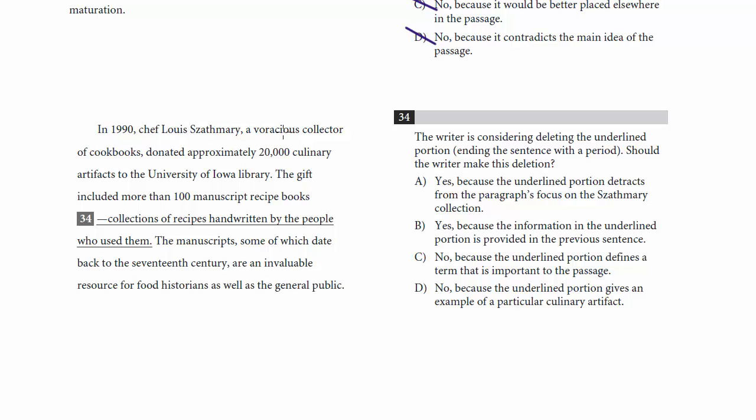In 1990, Chef Louis Sudmari, a voracious collector of cookbooks, donated approximately 20,000 culinary artifacts to the University of Iowa Library. The gift included more than 100 manuscript recipe books, collections of recipes handwritten by the people who use them. So this dashed off portion seems to me to be a definition. It tells us what a recipe book is. Now, maybe we can infer what a recipe book is, that it's a book that contains recipes. But this tells us that they're handwritten by the people who use them. That's a collection of recipes in these books. So do we really want to get rid of this? To me, this seems actually kind of essential to the paragraph, essential to knowing what a recipe book is and why it's important.